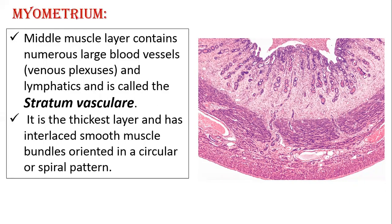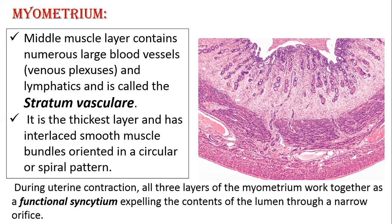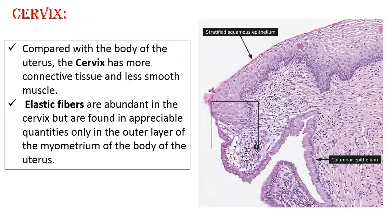The stratum muscularis is an important middle muscular layer. During uterine contraction, all three muscle layers act together and contract, which is why this is called a functional syncytium, expelling the contents of the lumen through a narrow orifice. Regarding the cervix — the lower conical part — its lining where it is continuous with the vagina is stratified squamous epithelium, but the upper part is simple columnar epithelium. Compared to the body, the cervix has more connective tissue, less smooth muscle, and more elastic fibers.